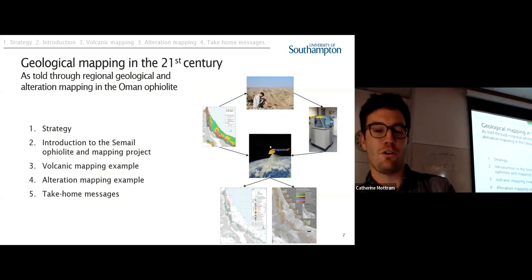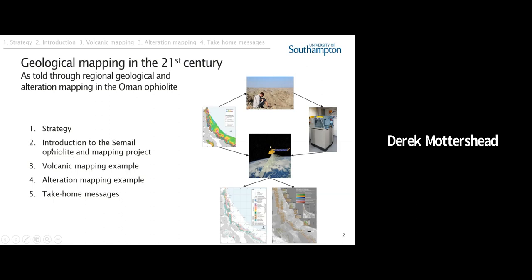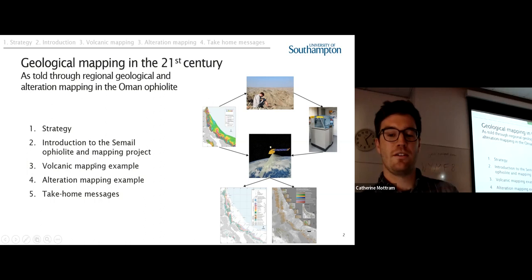So here's a quick overview of what I'm going to talk about. First, some generalized strategies to apply to geological mapping. You can hopefully apply to your own mapping. Then I'm going to introduce the Samail Ophiolite and our mapping project. Then we'll systematically go through the volcanic mapping portion of that project, and then the alteration mapping portion of that project. And then finally, try and extract some take-home messages that you can apply to your own projects.